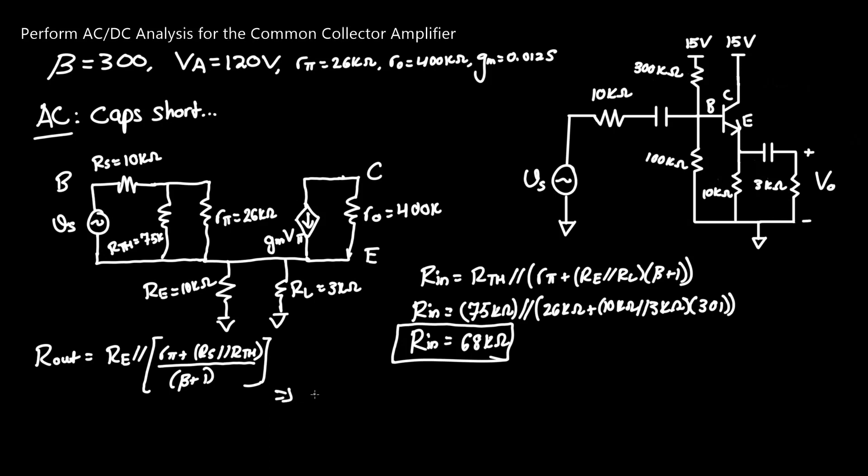We see that Rout equals 10 kilo ohms in parallel with Rpi, which is 26 kilo ohms, plus 10 kilo ohms in parallel with 75 kilo ohms, all over 301. Putting this in a calculator, you get a fairly small output resistance of 114.37 ohms. That is your answer for that one.